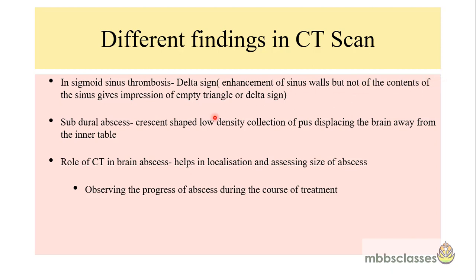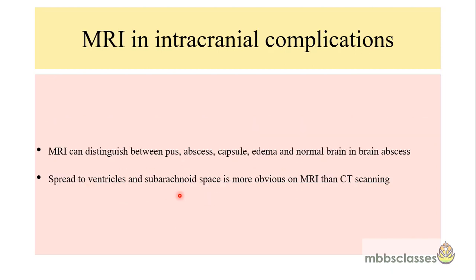In cases of subdural abscess on CT, there will be a crescent-shaped low-density collection of pus displacing the brain away from the inner table. In brain abscess, CT plays a vital role in localization and assessing the size of the abscess, and routine follow-up CTs are done to observe progress during treatment. MRI in intracranial complications — especially brain abscess — helps differentiate between pus, abscess capsule, edema, and normal brain tissue. In cases of disease spreading to the ventricles and subarachnoid space, MRI is more specific than CT.